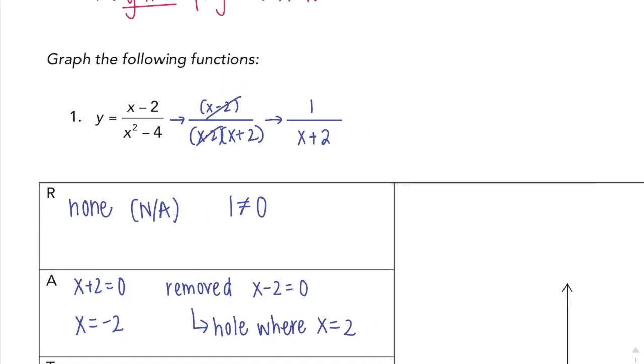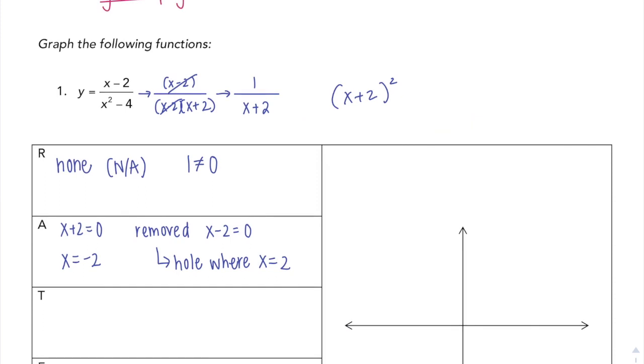Togetherness. Do you have any perfect square trinomials, or is there any like a term squared? There's an x squared, but that doesn't count. I need like x plus 2 squared. And if there's none of that in our function, which is what we have this one, then there is no togetherness.